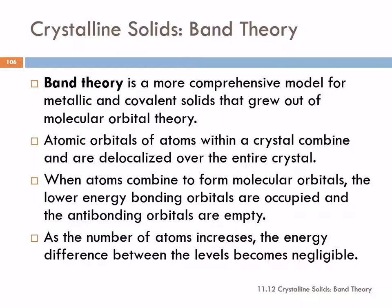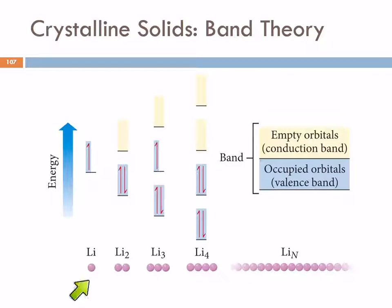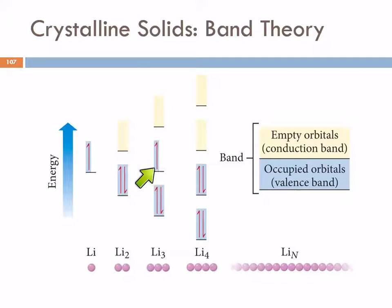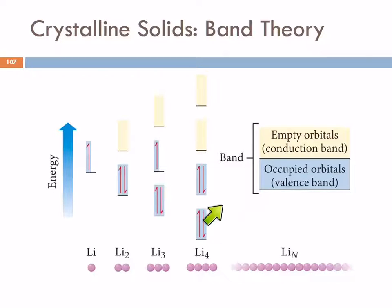The number of atoms in a particular solid all combine together, and as they combine, the difference between anti-bonding and bonding in energy becomes less and less. Here's lithium — lithium has a valence electron in one orbital. If we combine two lithium atoms, their orbitals combine and form a bonding orbital and an anti-bonding orbital. Those two electrons go into the bonding orbital and the anti-bonding will be empty. If we combine three or four lithium atoms, we end up with three or four different orbitals.